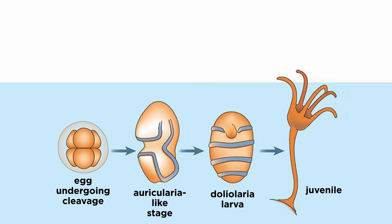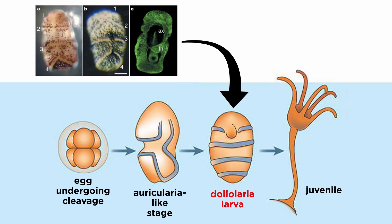They are dioecious, and their barrel-shaped doliolaria larvae are free-swimming for a time, until they become attached to the substrate and metamorphosize.